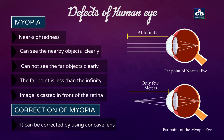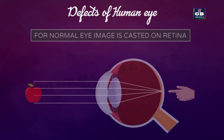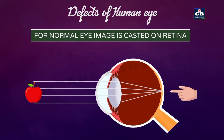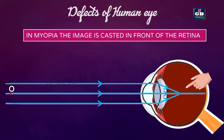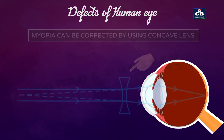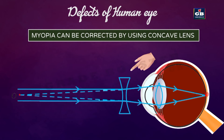In myopia, the image is cast in front of the retina instead of on it, leading to blurry vision. This can be corrected by using a concave lens, which makes the image fall on the retina so the myopic person can see far objects clearly. The two reasons for myopia are: excessive curvature of the eye lens, and elongation of the eyeball.